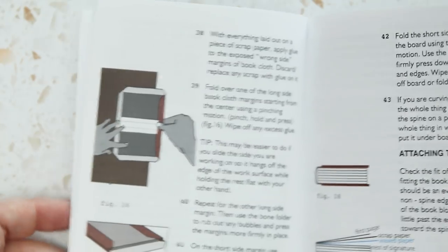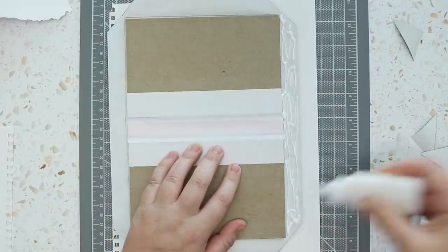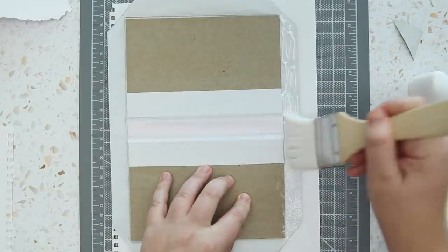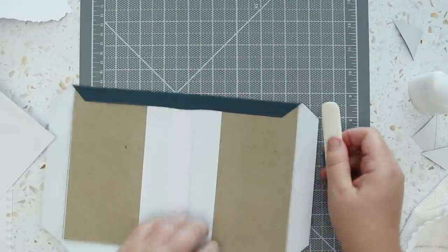Now onto folding over the margins of the book cloth on the other side, doing the long sides first and then starting from the center using a pinching motion and pushing in the corners of the book cloth.